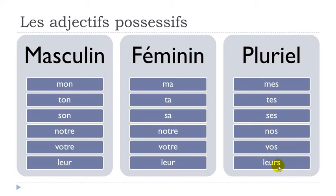Remember, even if you've got the final S, you don't pronounce it — as was already the case for NOS, you don't pronounce the final S. VOS, you don't pronounce it. LEUR. So one more time: MES, TES, SES, and then NOS, VOS, LEUR.